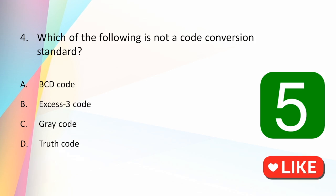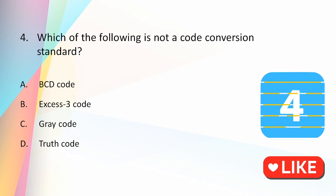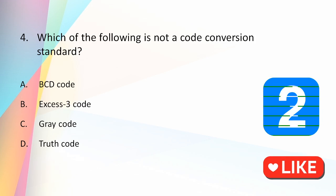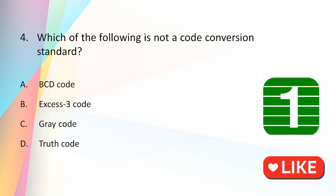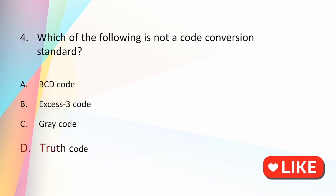Which of the following is NOT a code conversion standard: BCD code, XS3 code, Gray code, or truth code? The answer is truth code — there is no such code as truth code in code conversion standards.